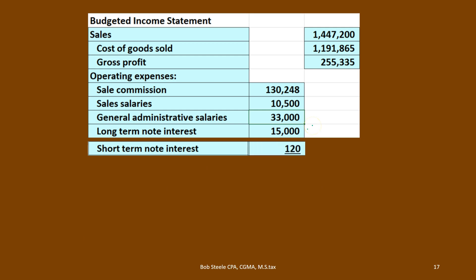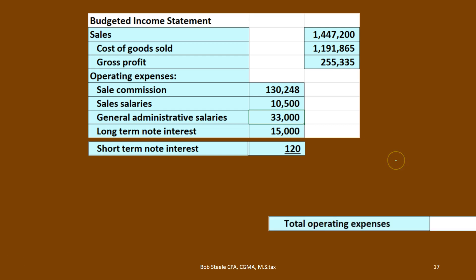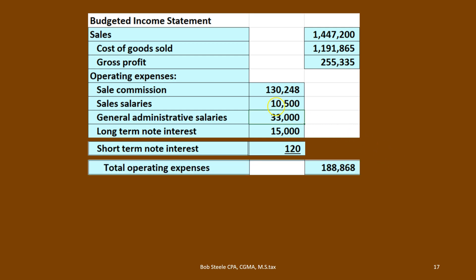Then we have the short-term note interest. We pull that number from the cash flow statement — you can pick it up from the statement of cash flows where we calculated the interest on the short-term note. If we sum all these operating expense items up, pulling them into the enter column and then out to the outer column, we get total operating expenses of 188,868.